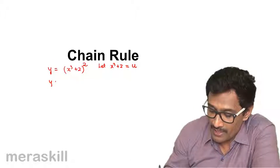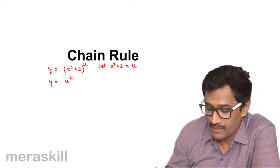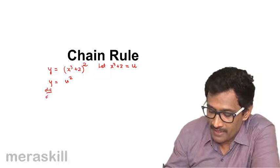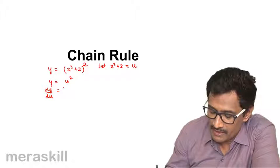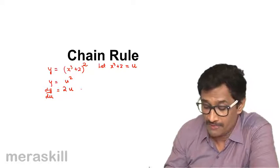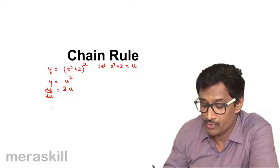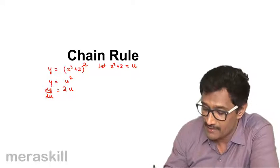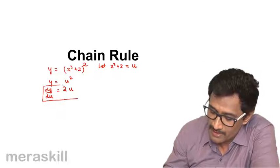So in that case, y is going to be u squared. So dy/du we find out is nothing but 2u. But we don't want to find dy/du — we need to find dy/dx, so this is at one place.